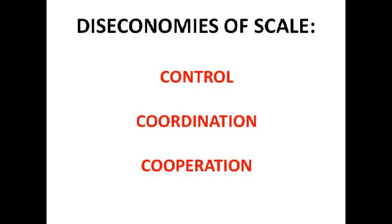Coordination is really hard in a big business — you have to achieve efficient flows of information, and that is quite expensive. Say you've got a factory in Belarus and a factory in Belgium — it's really hard to get information from one to the other efficiently, making sure you've got a secure internet connection, emails, and so on. Also, bigger companies tend to have more supply contracts, which is quite an expensive thing to handle.